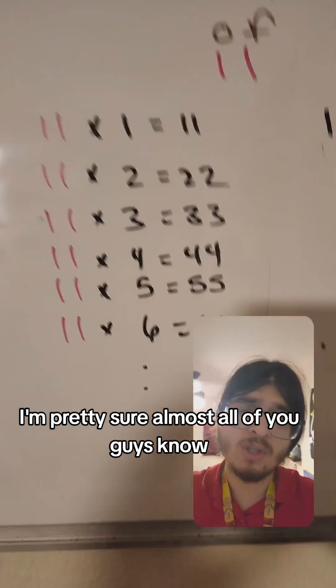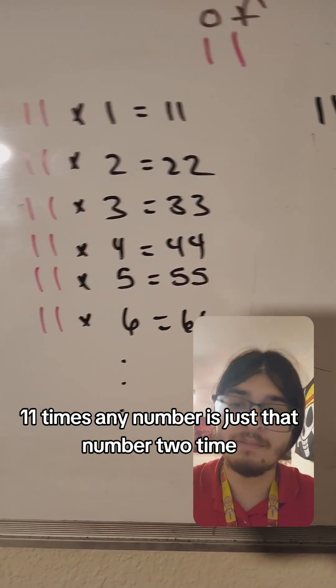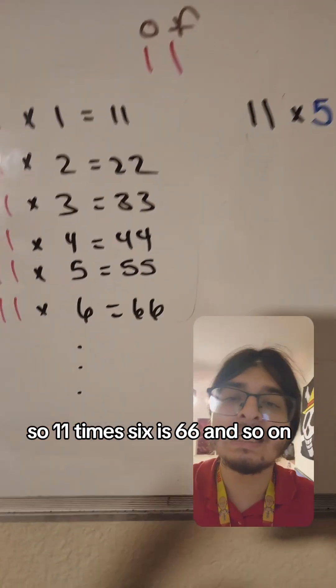So the first hack we have here, I'm pretty sure almost all of you guys know, 11 times any number is just that number two times. So 11 times 6 is 66 and so on.